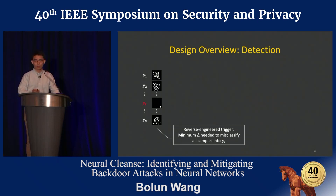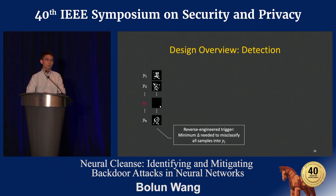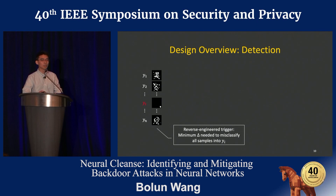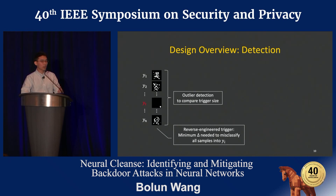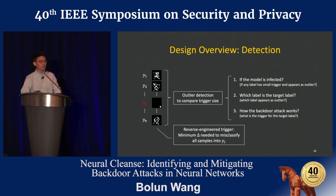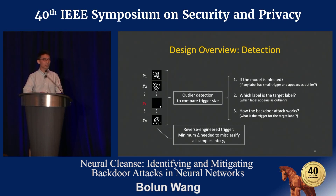Using this intuition, we design a detection process. The first step is to calculate this minimum delta for every single label in the model — and rather than calculating the delta as a simple number, we reverse-engineer the entire trigger needed to achieve misclassification. The second step is to compare all these triggers and see which one is particularly small and appears as an outlier using an outlier detection algorithm. The output tells us three things: whether the model is infected, which labels are the target labels, and what the reverse-engineered triggers look like.